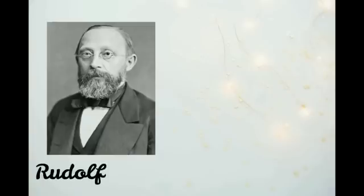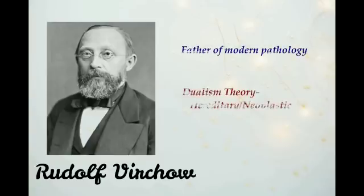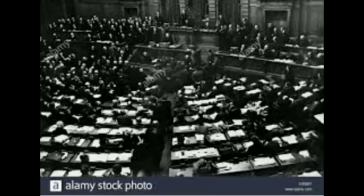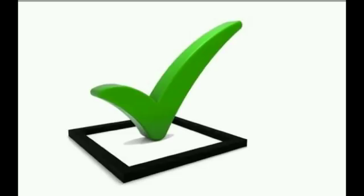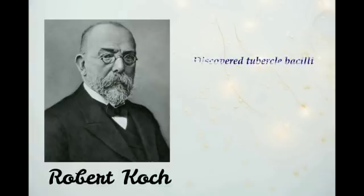However, Wilhelmine was not able to isolate the organism, and his report received a very hostile reception. Rudolf Virchow, the father of modern pathology, proposed the hereditary and neoplastic dualism theory for the origin of phthisis and tuberculosis. Since Rudolf Virchow was also a member of the Reichstag panel, his theory was accepted without any evident proof.